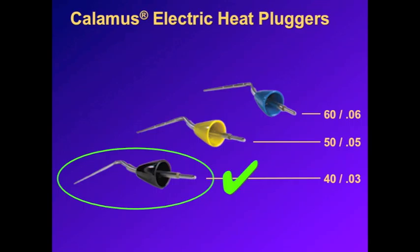So with that in mind, a 40-03 Calamus heat plugger works exceptionally well in my hands, nearly every system. There are occasions when I'll go to a larger heat tip, but most of the time, it's unnecessary.